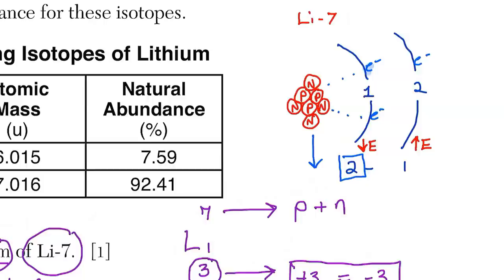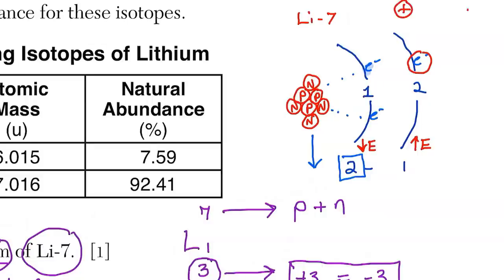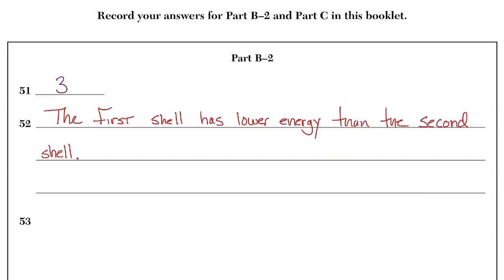Why do outermost electrons have higher energy? Electrons farther away can't feel the positive charge as strongly because positives attract negatives, but as distance increases it's harder for them to attract. The best analogy: if your mom or dad sits next to you all day in school, you act differently than if they're far away — you have more freedom and more energy. Outermost electrons are higher energy, and they're also valence electrons available for bonding. The answer is: the first shell has lower energy than the second shell.